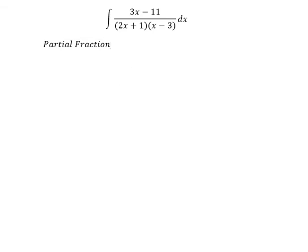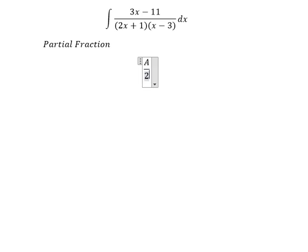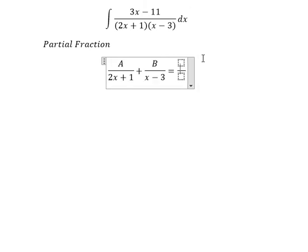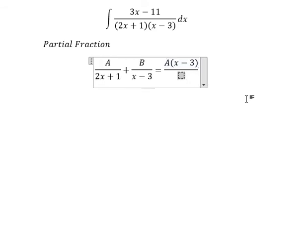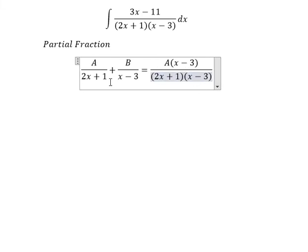So we will have capital A over 2x plus 1 plus capital B over x minus 3. So we do common denominator in here. So A multiply with x minus 3, and 2x plus 1 multiplied with B in here.